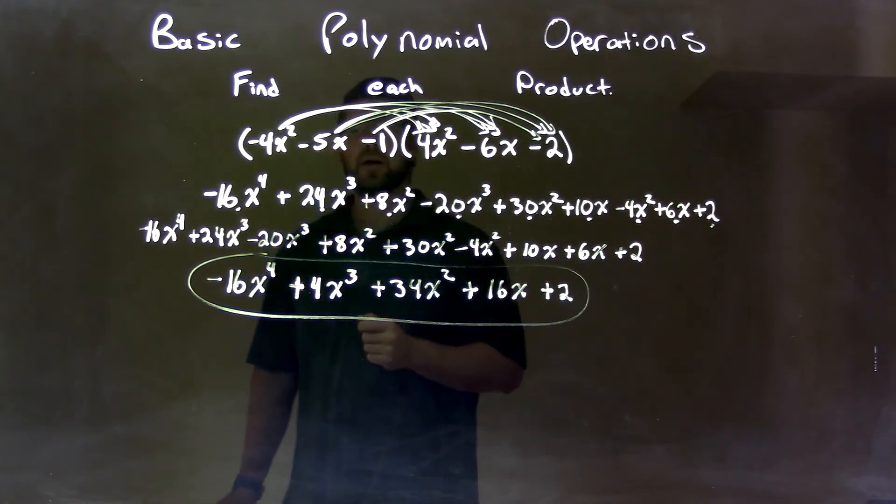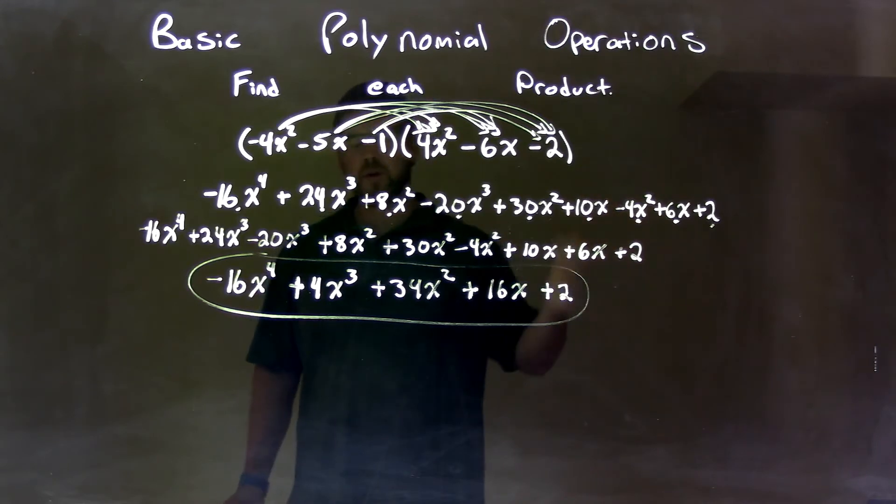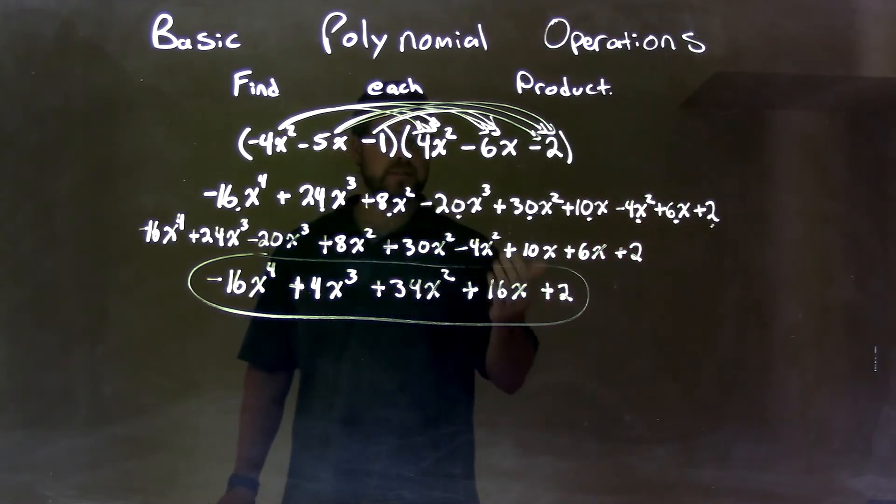Then from there, we got this whole long thing. I then rearranged that to put all my like terms together. Highest degrees, right? So the fourth powers, third powers, second powers, first powers, and constants.